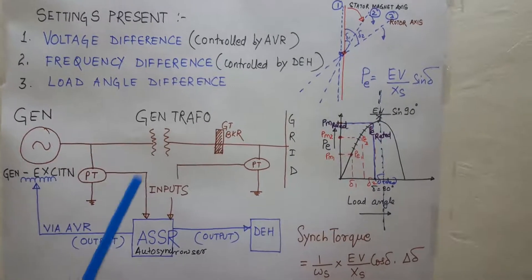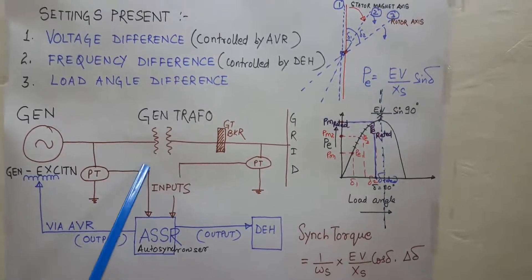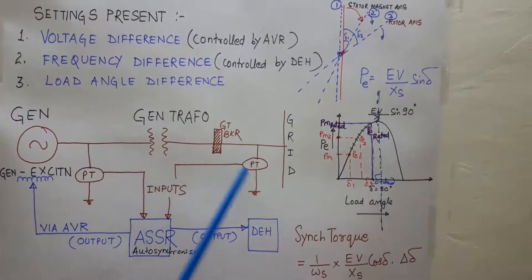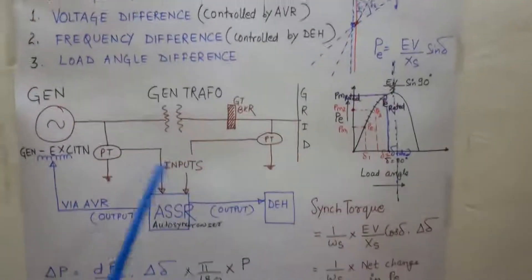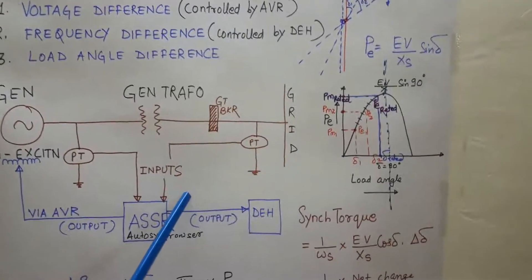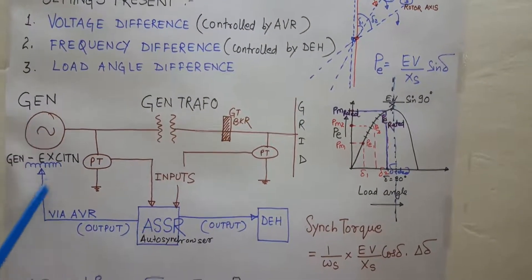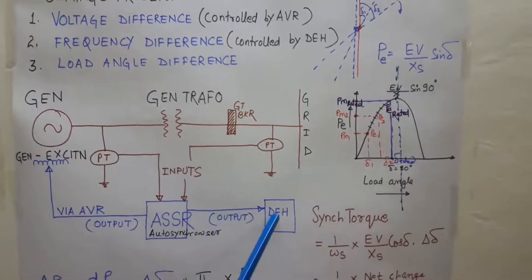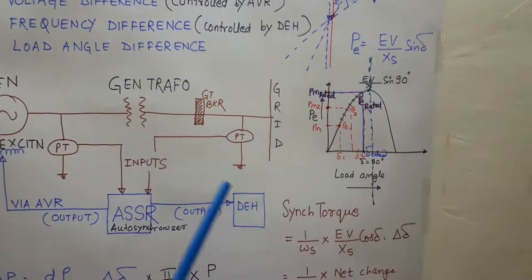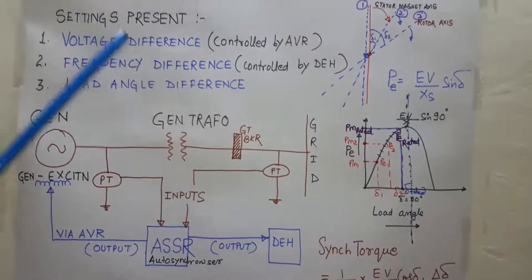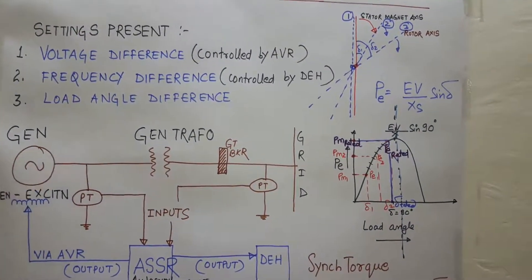So if I will summarize, the auto synchronizer is taking two inputs: one input from the generator PT, second input from the switchyard PT. By comparing, it decides whether the signal has to be sent to the automatic voltage regulator or to the DEH of the turbine. Now suppose the auto synchronizer has brought all the three parameters into the allowable limit.